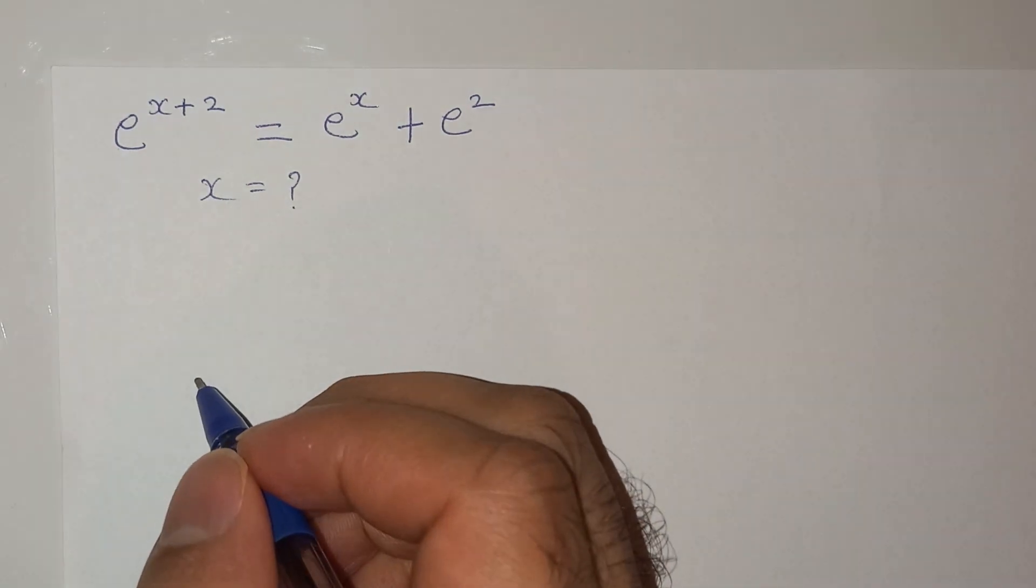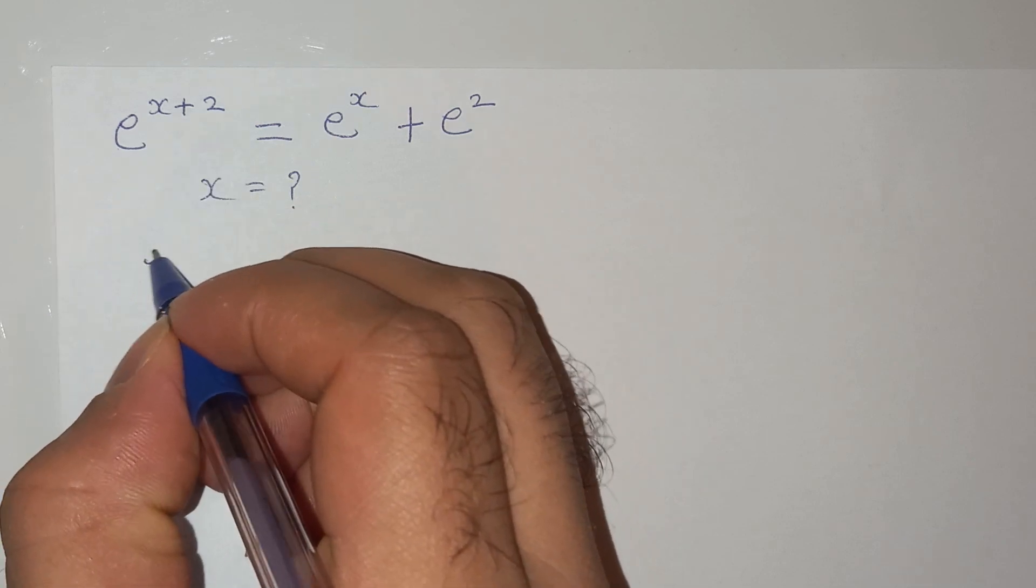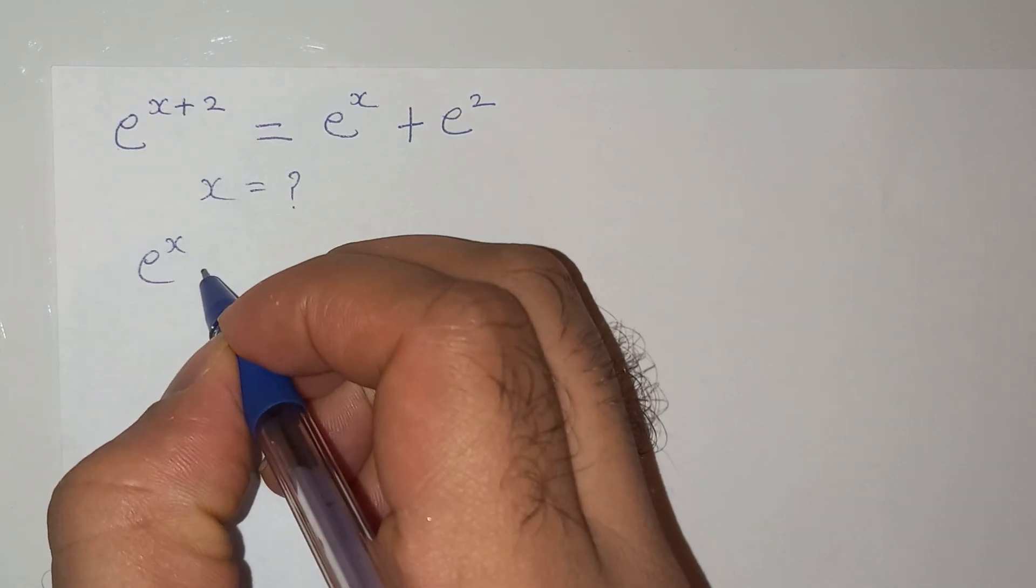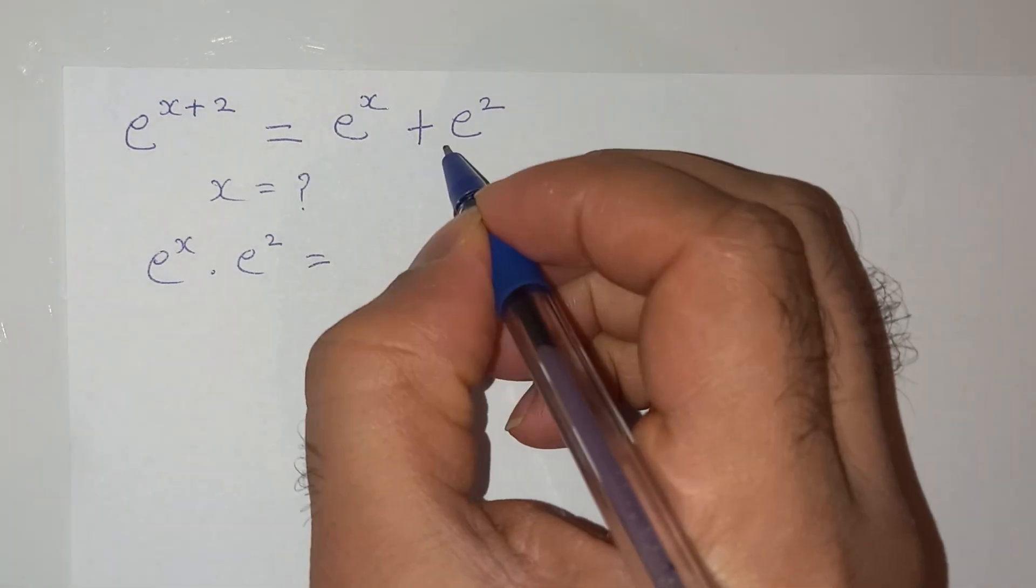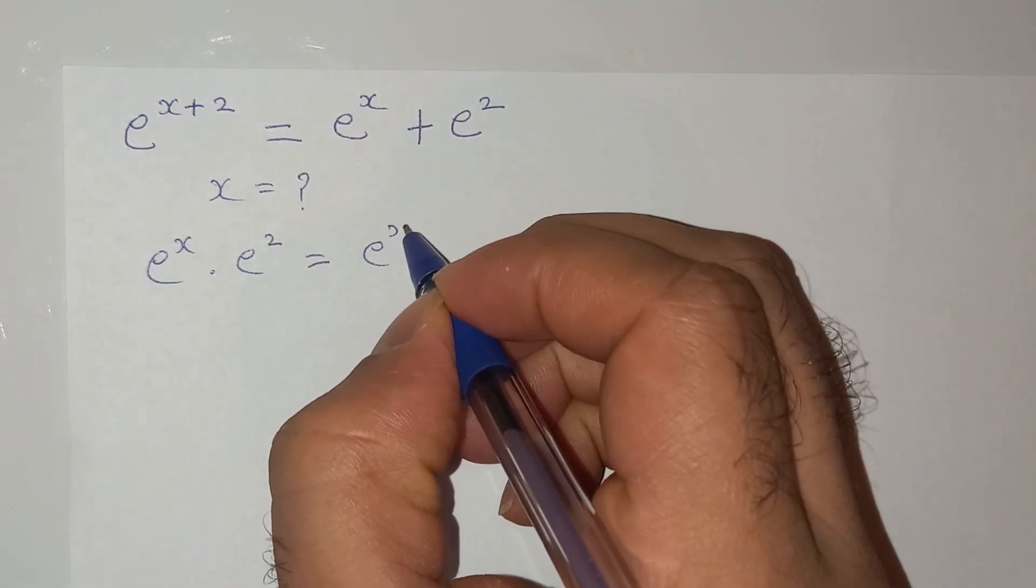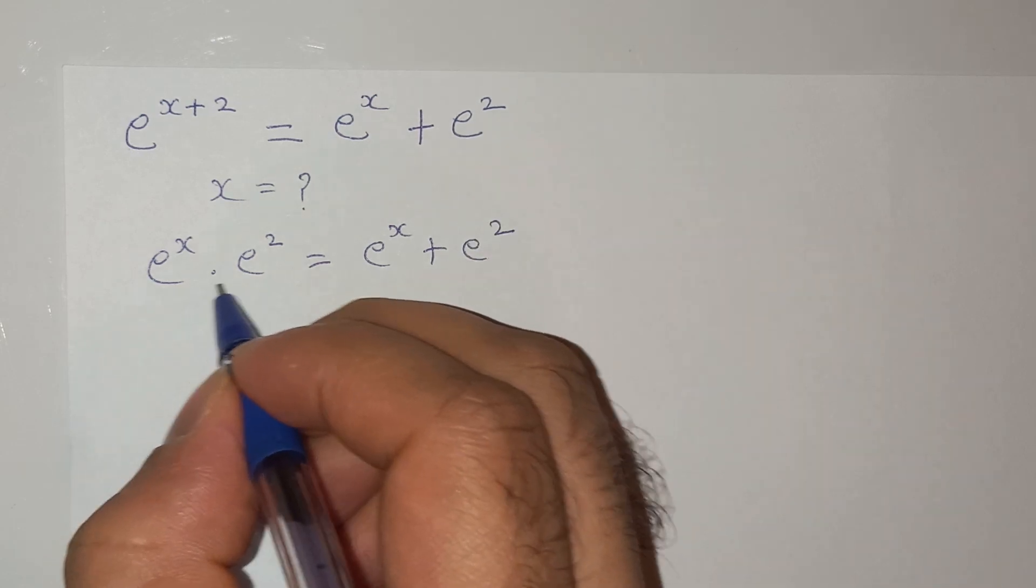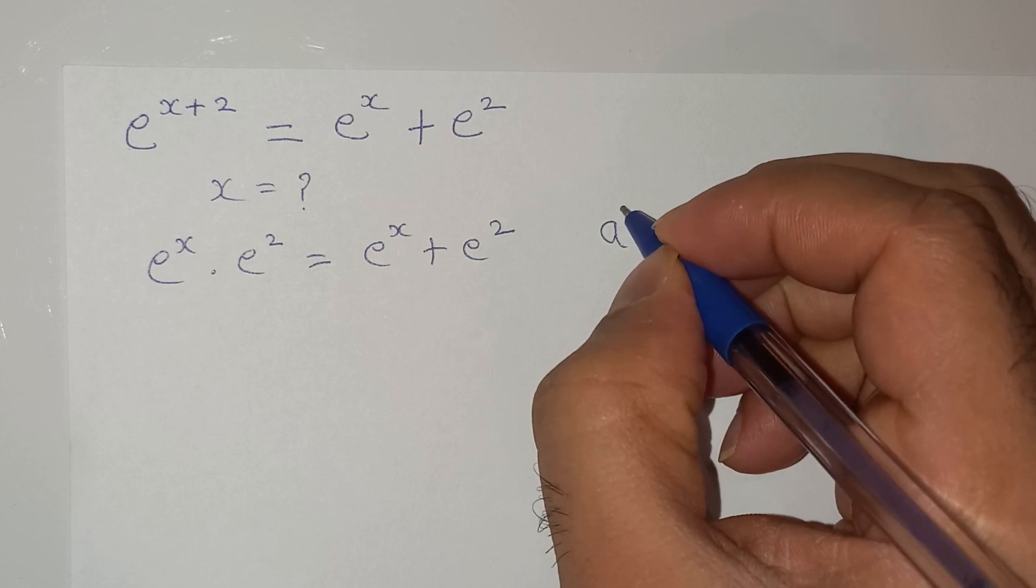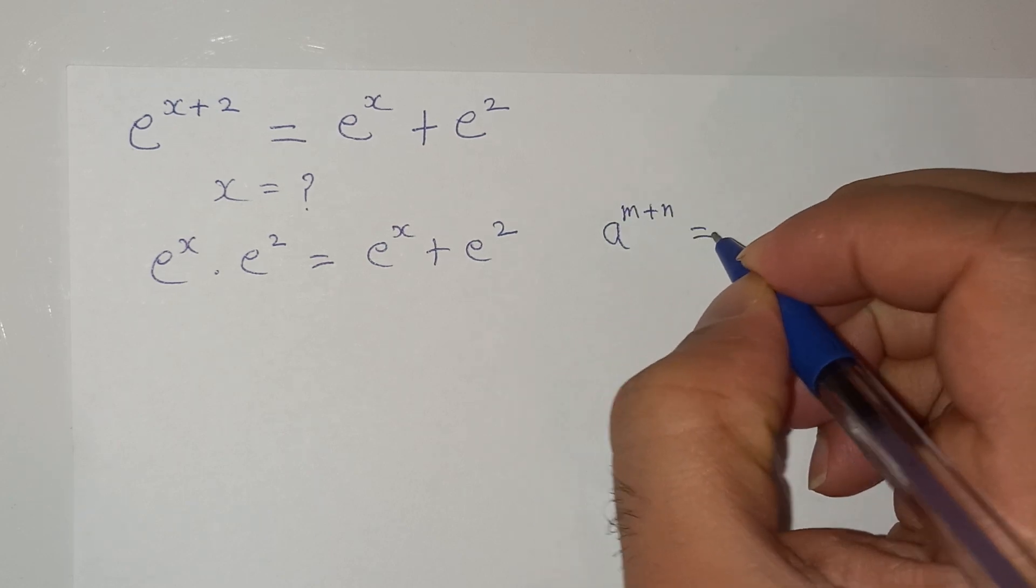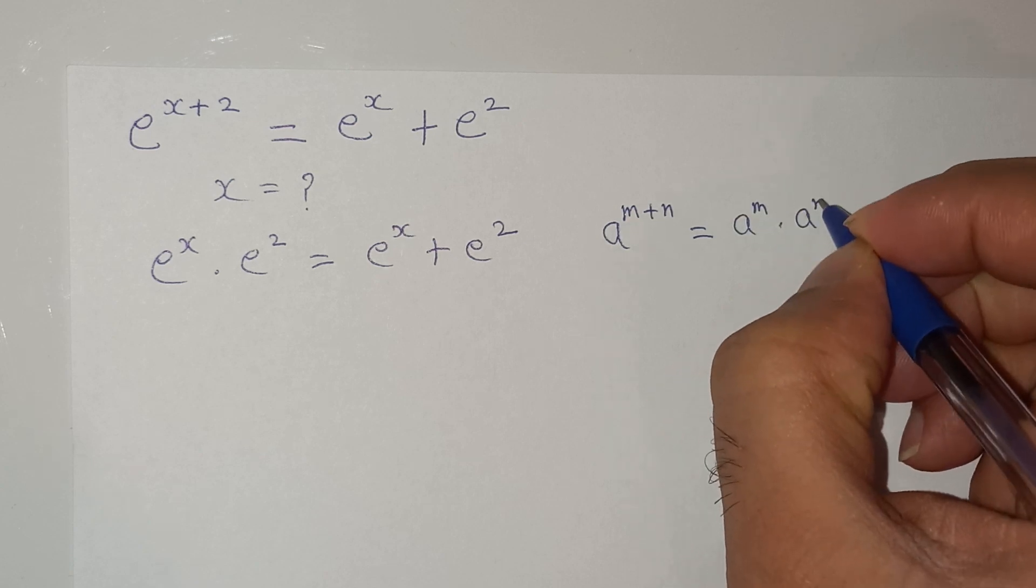So how to solve this question? We can write this e power x plus 2 as e power x multiplied e square equals to the right hand side, e power x plus e square. What I have done here is applied this exponential rule which is a power m plus n equals to a power m multiplied a power n.